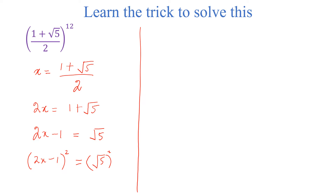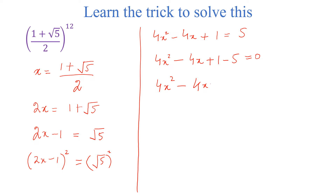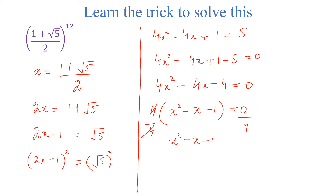From the left side, we can write 4x² minus 4x plus 1 is equal to 5. Now we can write 4x² minus 4x plus 1 minus 5 is equal to 0. Simplifying, 4x² minus 4x minus 4 is equal to 0. Dividing both sides by 4, we get x² minus x minus 1 is equal to 0. From here we can write x² is equal to x plus 1.